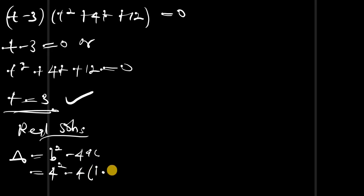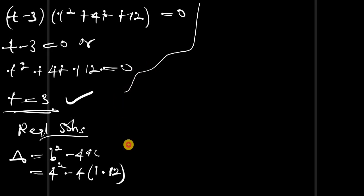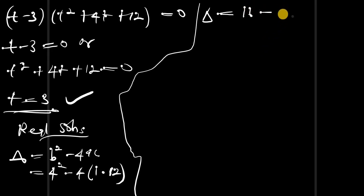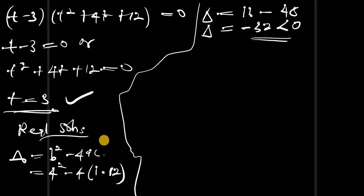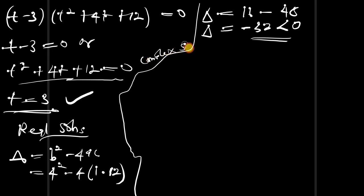The discriminant equals b squared minus 4ac. From t² + 4t + 12, b is 4 and c is 12. So discriminant equals 4 squared minus 4 times 1 times 12, which is 16 minus 48, giving negative 32. Since the discriminant is less than zero, this gives only complex solutions — so we are not going to use this.